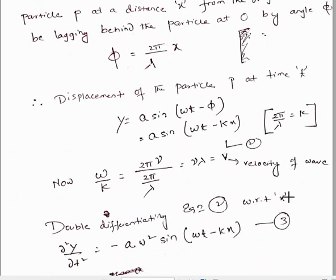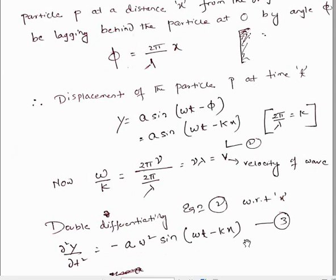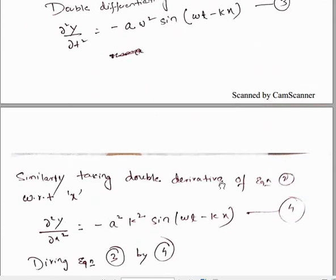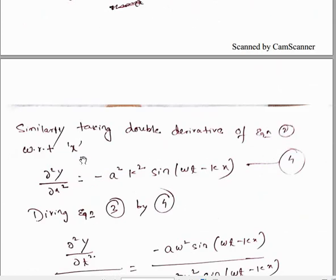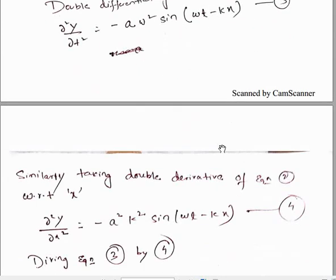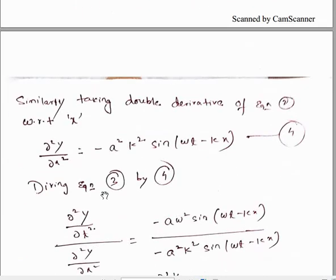Now, double differentiating equation 2 with respect to t gives us equation 3. Then, double differentiating the same equation 2 with respect to x gives us equation 4. So first I differentiate equation 2 with respect to t to get equation 3, and next I differentiate equation 2 with respect to x to get equation 4.